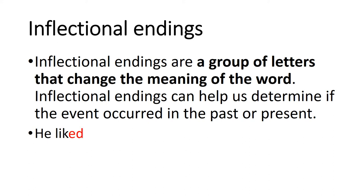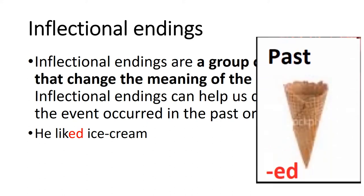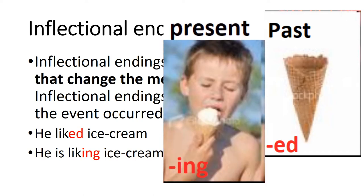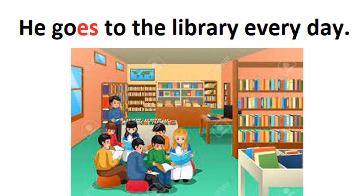For example: 'He liked ice cream.' Liked जो है यह past है — उसने आइसक्रीम खा ली, वो खा चुका है। 'He is liking ice cream' — वो ice cream पसंद करता है, तो इससे पता चला कि present है। Present tense में -ing लगाते हैं। Base word की ending की spelling change करके जो تبدیلی آتی ہے tense میں، اسکو inflectional endings کہتے ہیں۔ 'He goes to the library everyday' — वो हर रोज लाइब्रेरी जाता है।